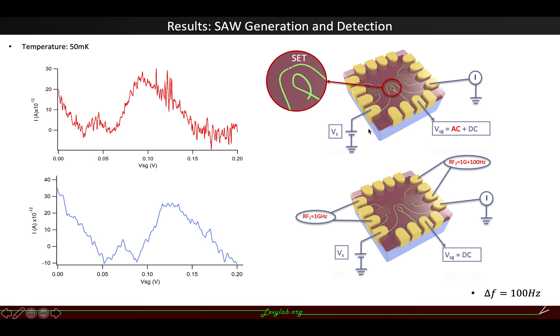After that, we turn off the AC side gate voltage and turn on the radio frequency generator to generate surface acoustic wave. And single electron transistor shows a similar tuning trend.